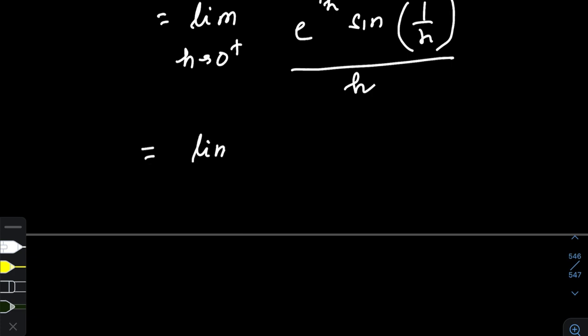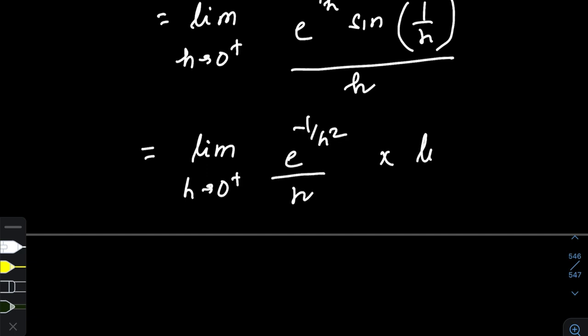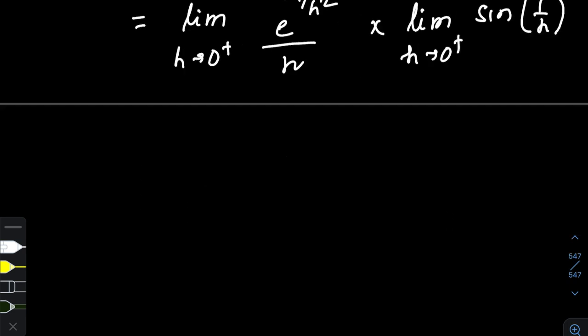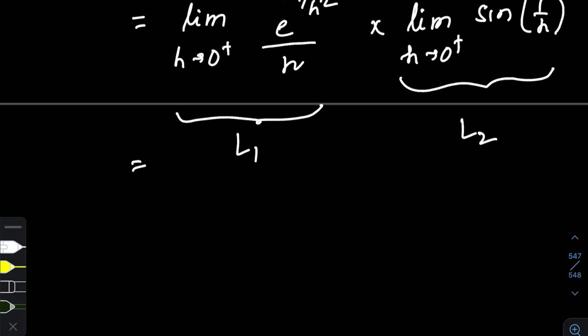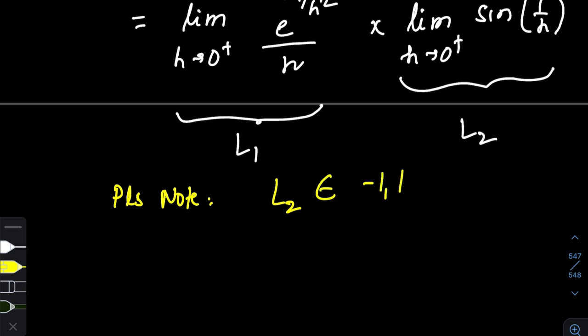We split this limit into two parts: L1 = limit as h tends to zero plus of e to the power minus one by h squared divided by h, and L2 = limit as h tends to zero plus of sine of one by h. Now L2 is a bounded value — it lies between minus one and one. We don't know its exact value because sine of one by x oscillates very vigorously in the neighborhood of zero, but it is bounded.